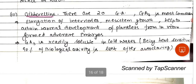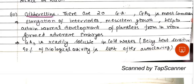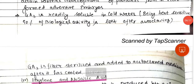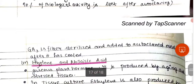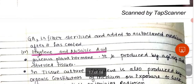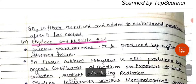Gibberellins, specifically gibberellic acid, help to attain normal development of plantlets from in vitro formed embryos. If media containing gibberellic acid is autoclaved, 90% activity is lost. Therefore, gibberellic acid-containing media should not be autoclaved — it must be filter sterilized, not autoclaved.